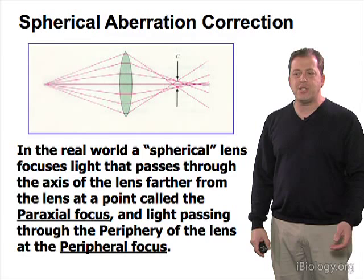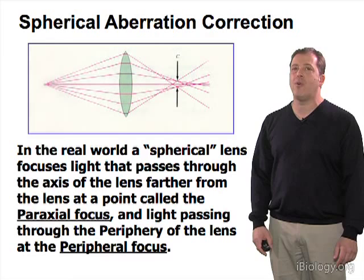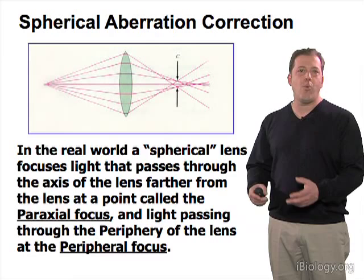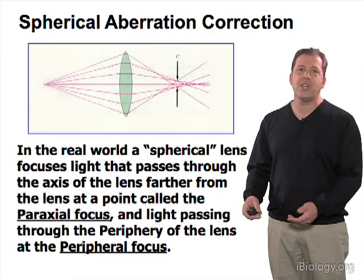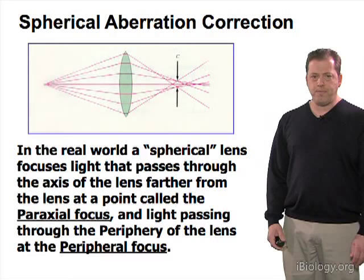Spherical aberration, as I mentioned in the previous lecture, is one of those aberrations that's extremely difficult — in fact impossible — to completely correct for in the manufacture of lenses, because the design criteria used to make lenses don't necessarily match the imaging conditions you need in the laboratory to address your questions of interest.